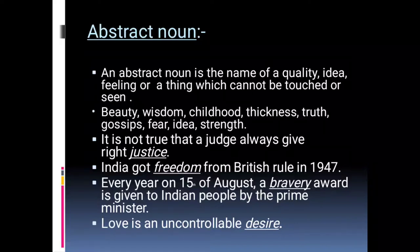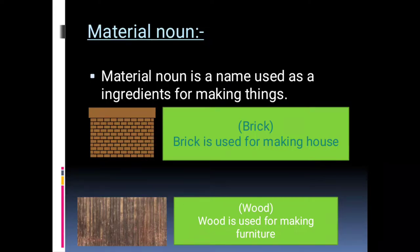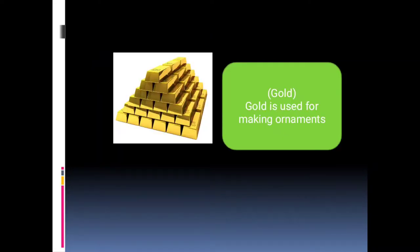Material noun is a name used for ingredients or materials used for making things. Examples: brick — brick is used for making houses; wood — wood is used for making furniture; gold — gold is used for making ornaments.